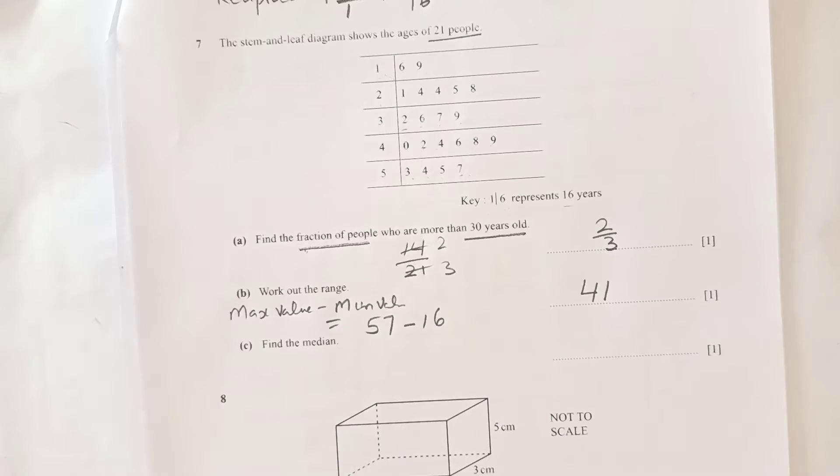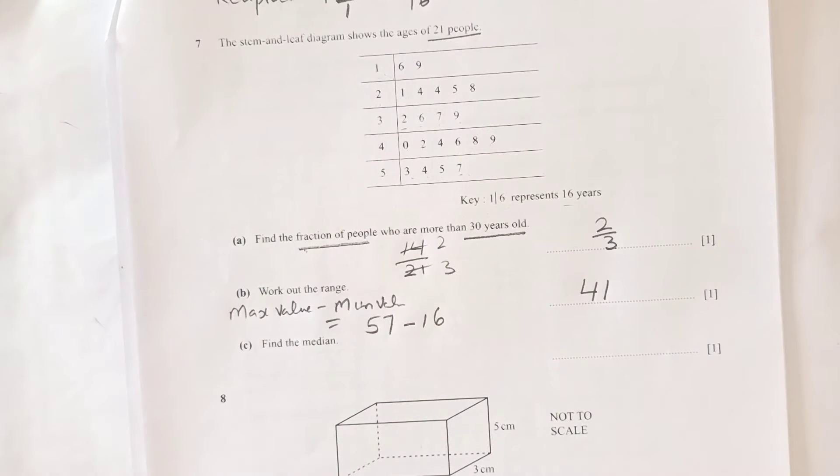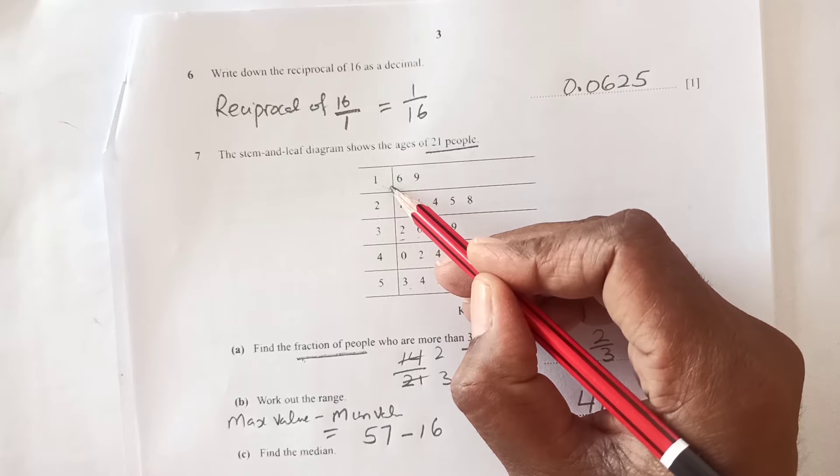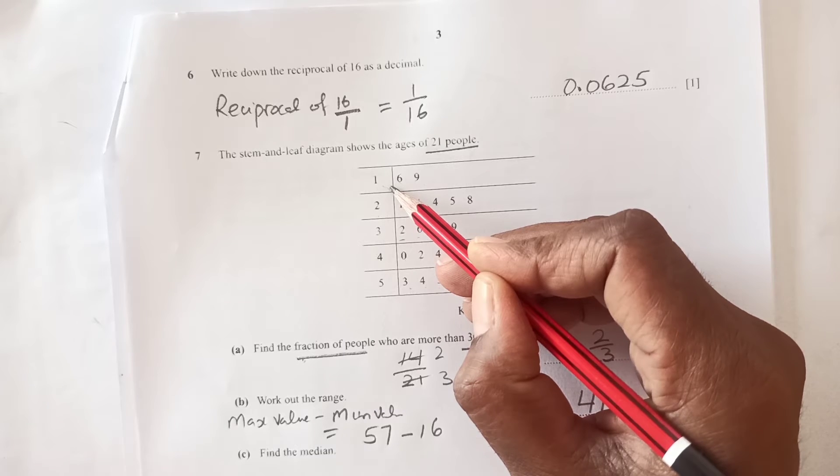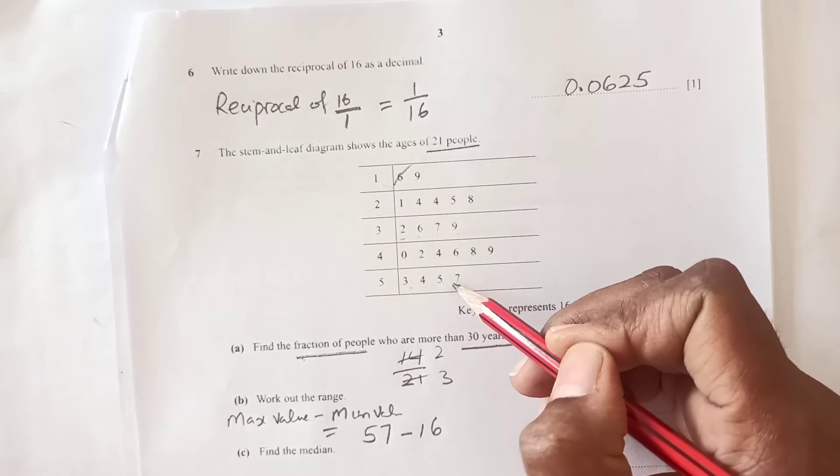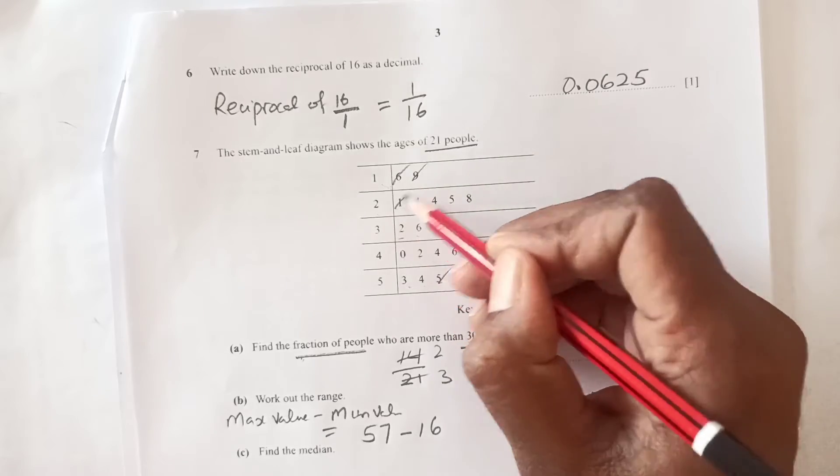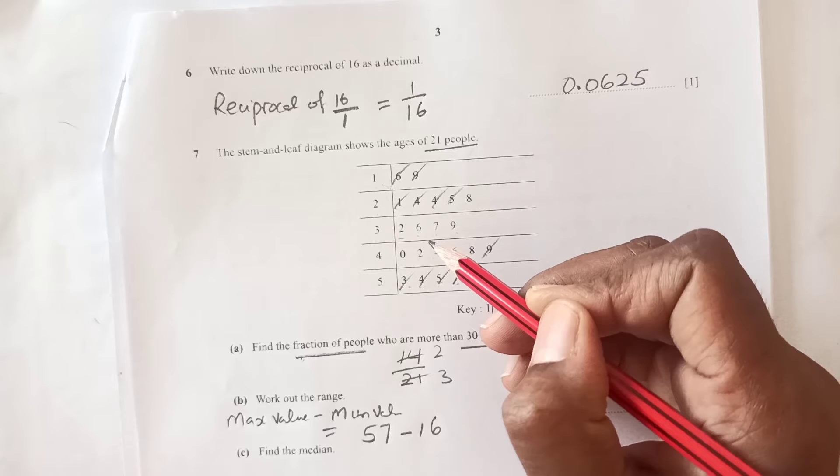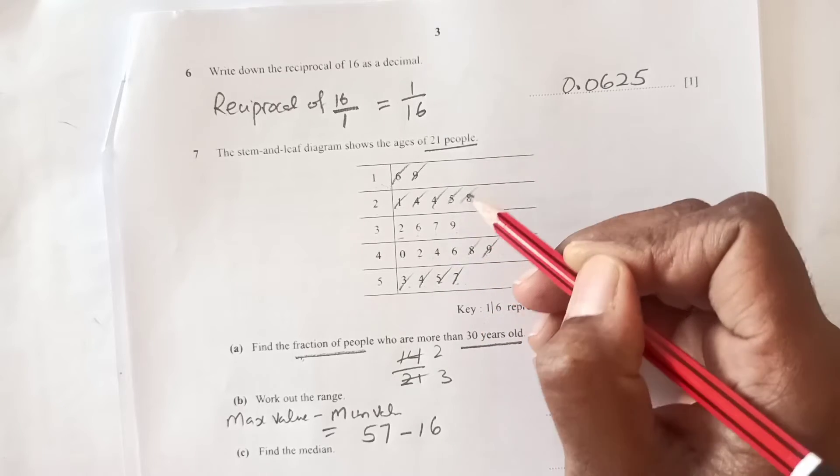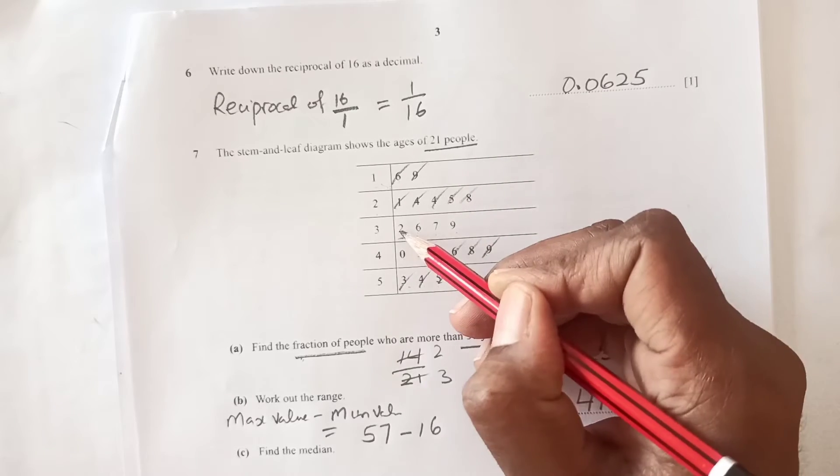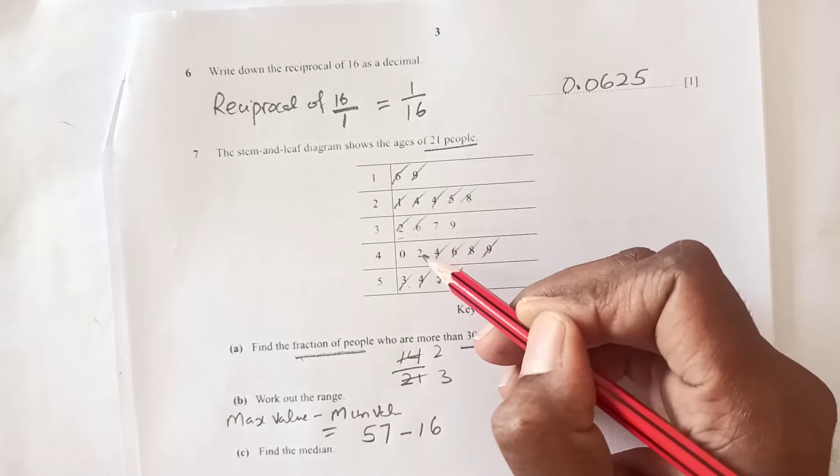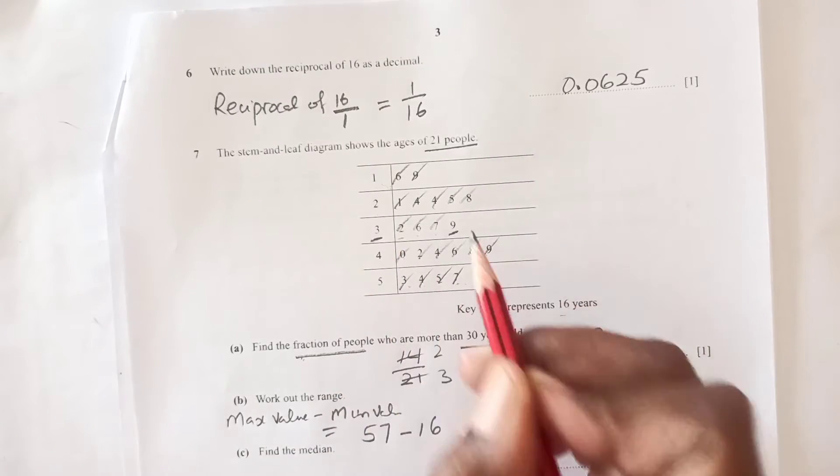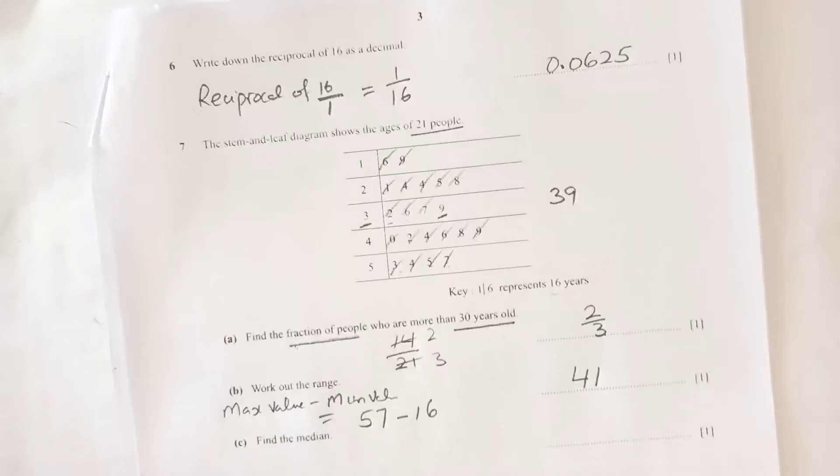Find the median. For median, we get the middle value. Let's strike off these from the lowest and the highest like this, then we will find the middle value. We are left with 39, so 39 is the median.